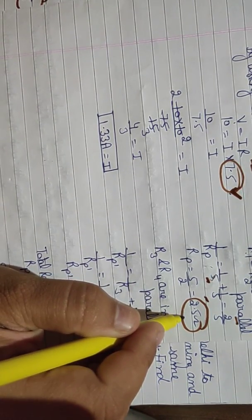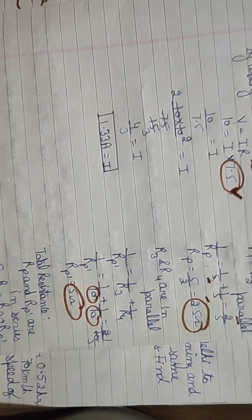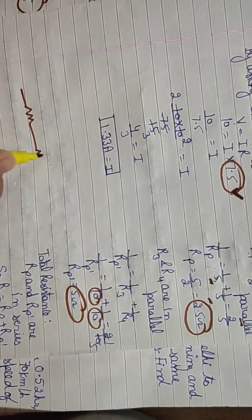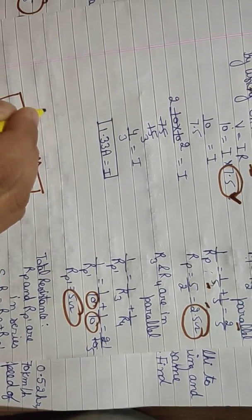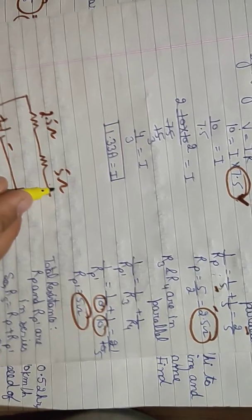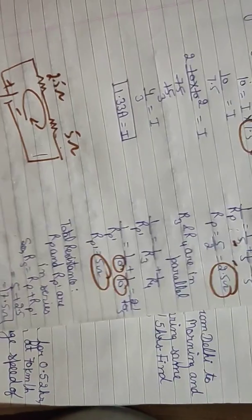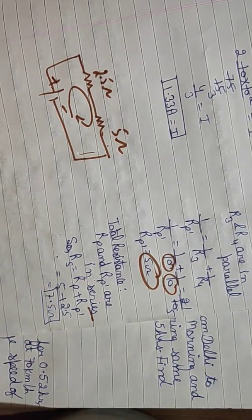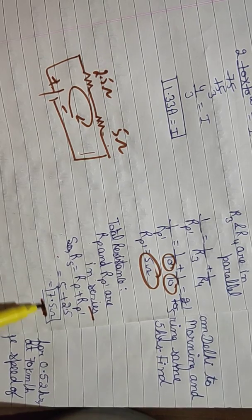Now R1-R2 were solved to give one resistor, and R3-R4 were solved to give another. Both these equivalent resistors are now in series. Rp = 2.5 ohm and Rp' = 5 ohm are in series, so total resistance = 2.5 + 5 = 7.5 ohm, which is the total effective resistance of the whole circuit.